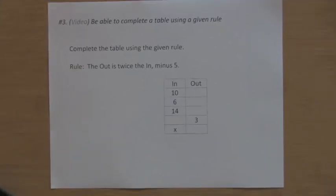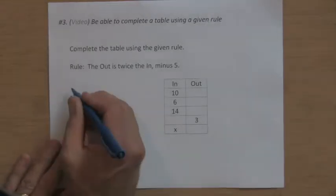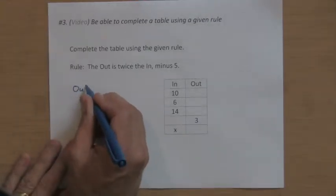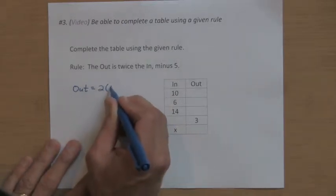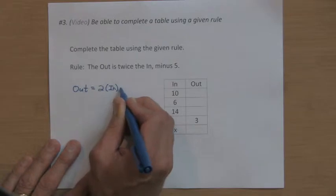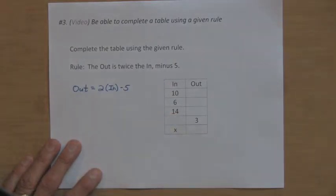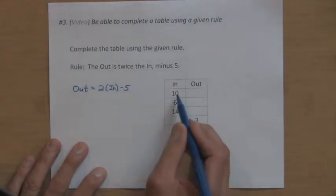The rule says the out is twice the in minus five. So you can think of it this way: whatever the out is going to be, it is twice the in. So you're going to take two times whatever is in the in column, and you're going to take away five from that answer to find the out.